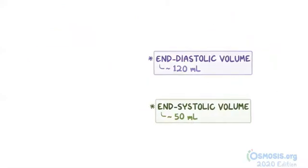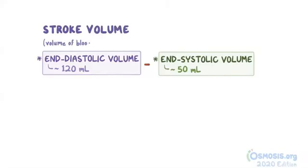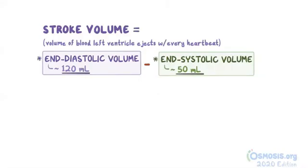End diastolic volume minus end systolic volume gives us the stroke volume, which is the volume of blood that the left ventricle ejects with every heartbeat, or stroke. In this case, the stroke volume is 120 minus 50, which equals 70 milliliters.